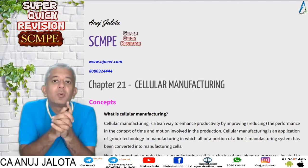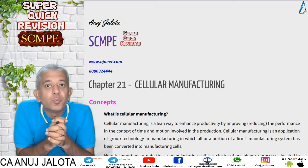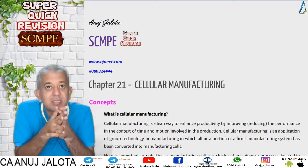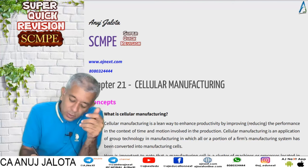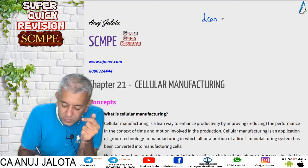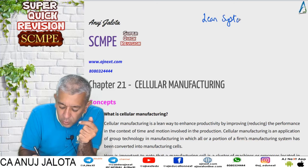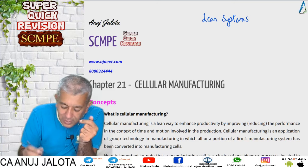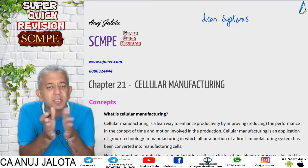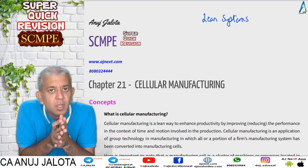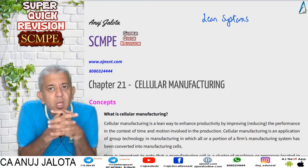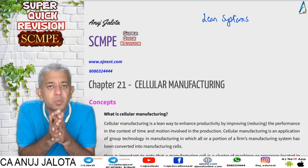Welcome back to our series of super quick revision. We are on to cellular manufacturing now. Before I start, let me tell you that in your module there is a topic called lean systems, and three chapters that we are doing — the last one, this one, and the next one — are all part of lean systems. Lean systems are there for what? You want to become profitable, you want to become better — avoid the wastages.